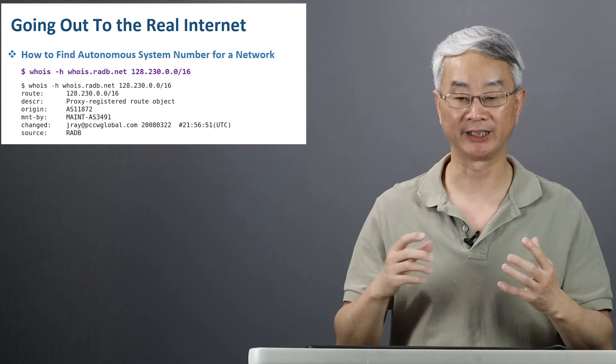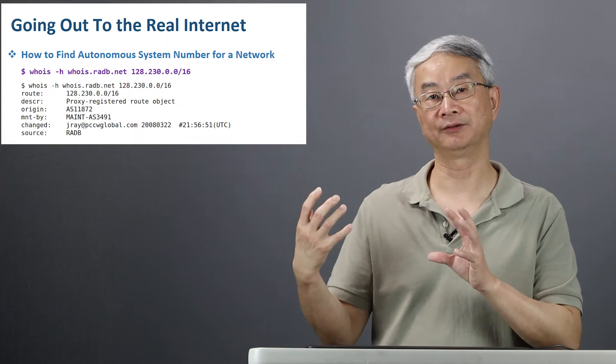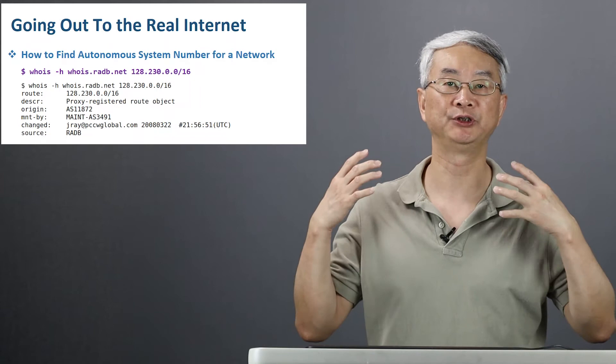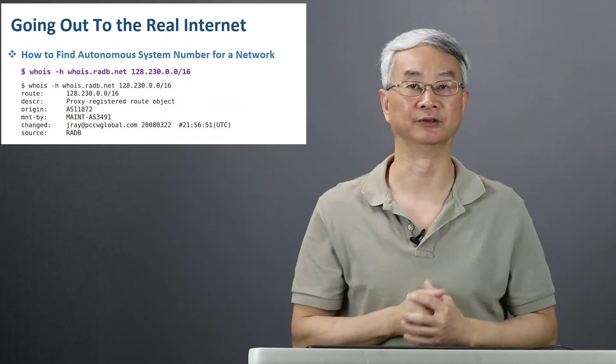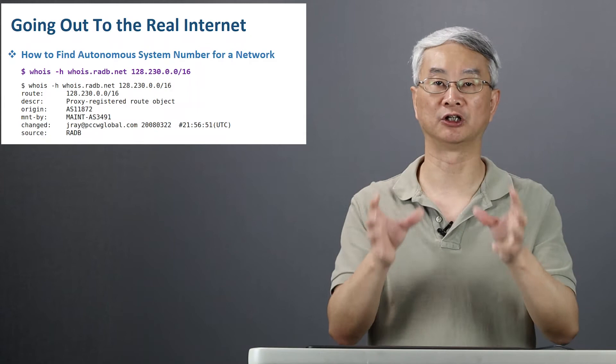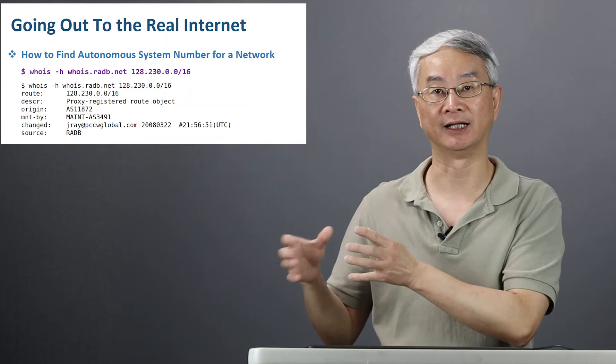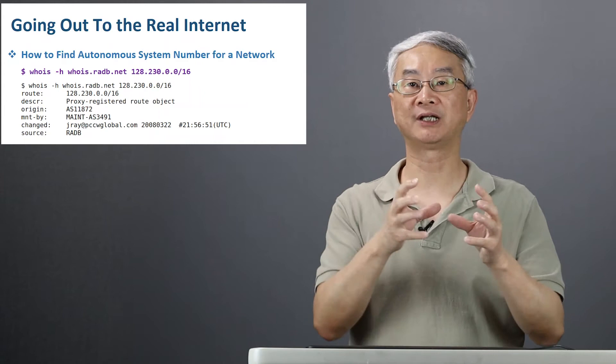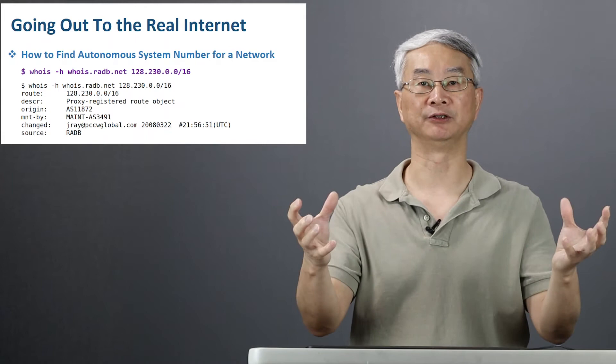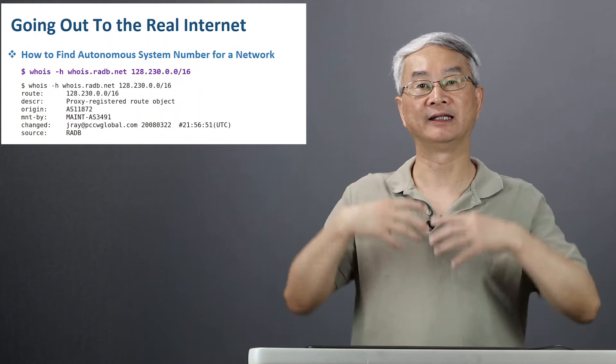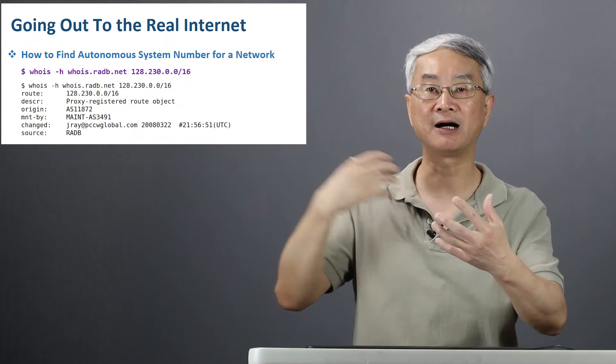How do we get out? The idea of getting out to a real internet, to a real destination: what we need to do is basically just announce those IP prefixes inside the emulator. In this example, we're going to select one autonomous system — 11872 — which is the autonomous system for Syracuse University, and that's where I work. We're going to put a BGP router inside the emulator to announce to the entire emulator that in order to reach Syracuse University, you come to me. From there, I will route your traffic to the real internet. When the reply comes back, I'm going to forward the response back to you. That's how it works.